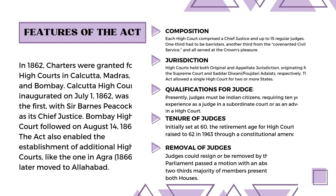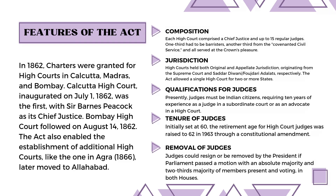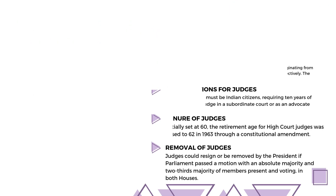Features of the Act: In 1862, charters were granted for High Courts in Calcutta, Madras, and Bombay. Calcutta High Court, inaugurated on July 1, 1862, was the first, with Sir Barnes Peacock as its Chief Justice. Bombay High Court followed on August 14, 1862. The Act also enabled the establishment of additional High Courts, like the one in Agra in 1866, later moved to Allahabad.